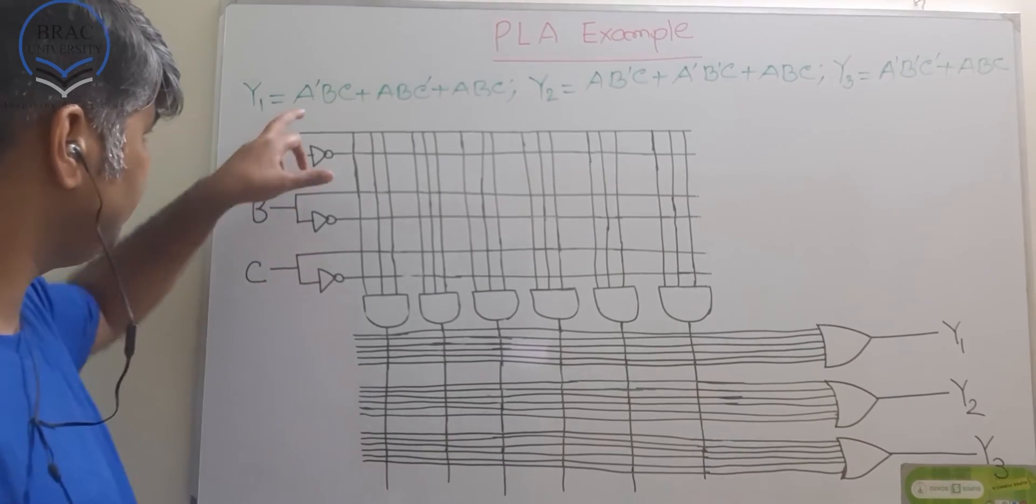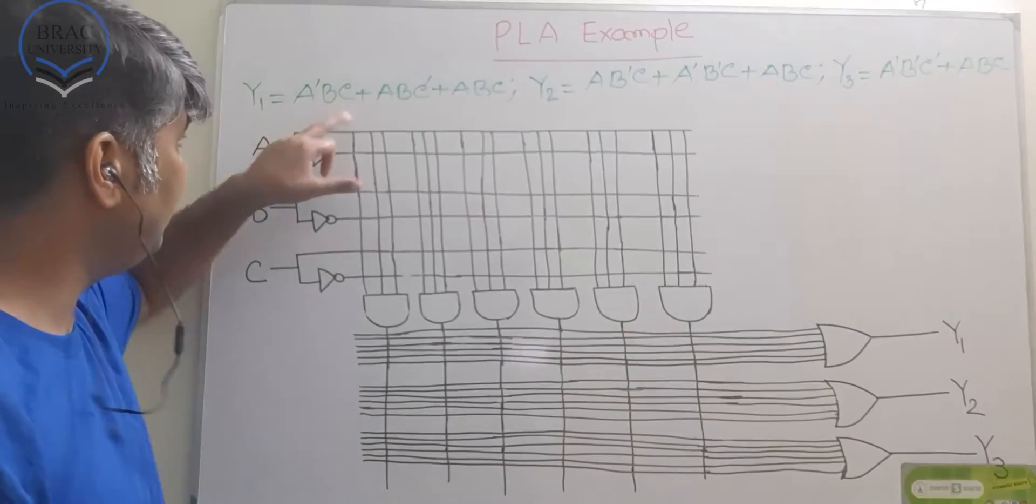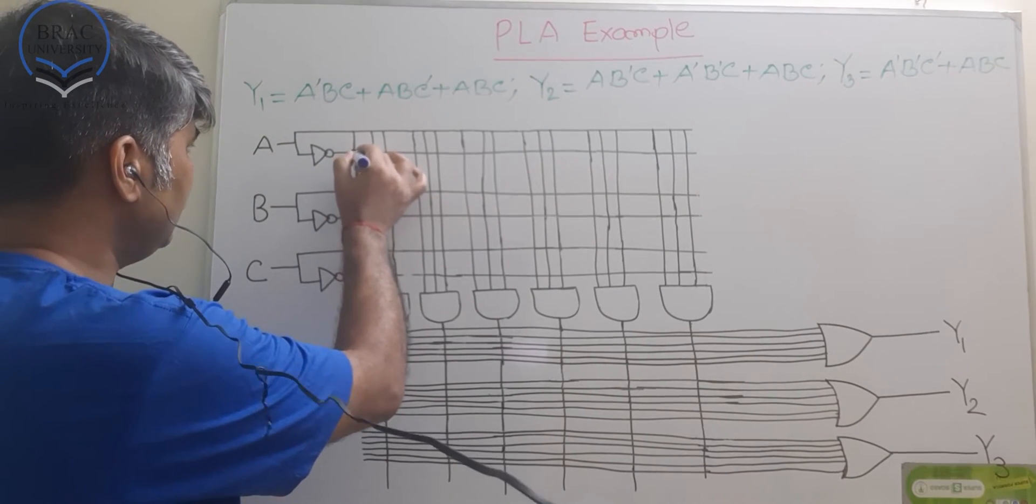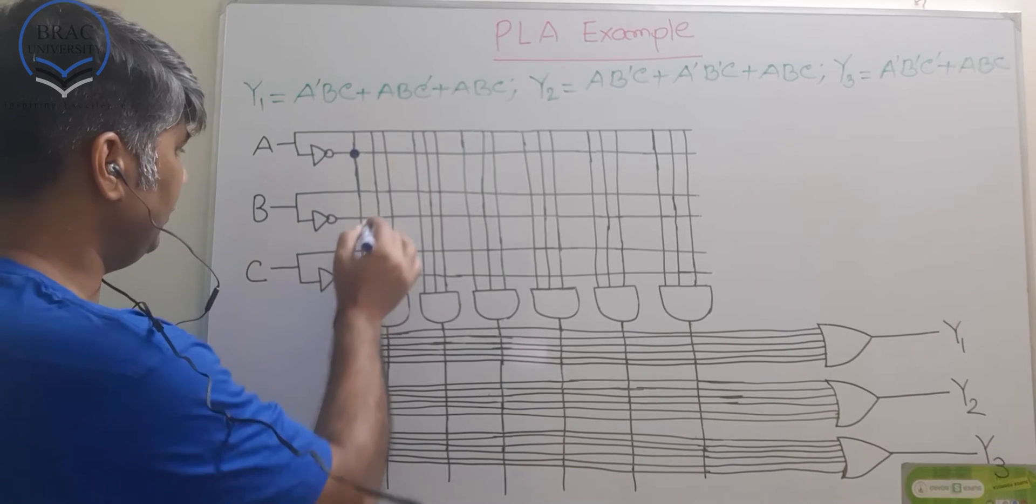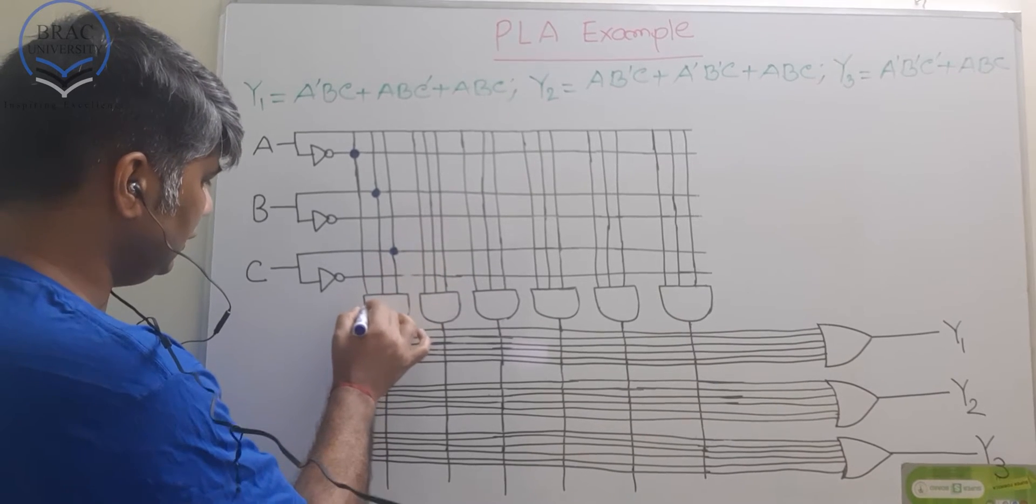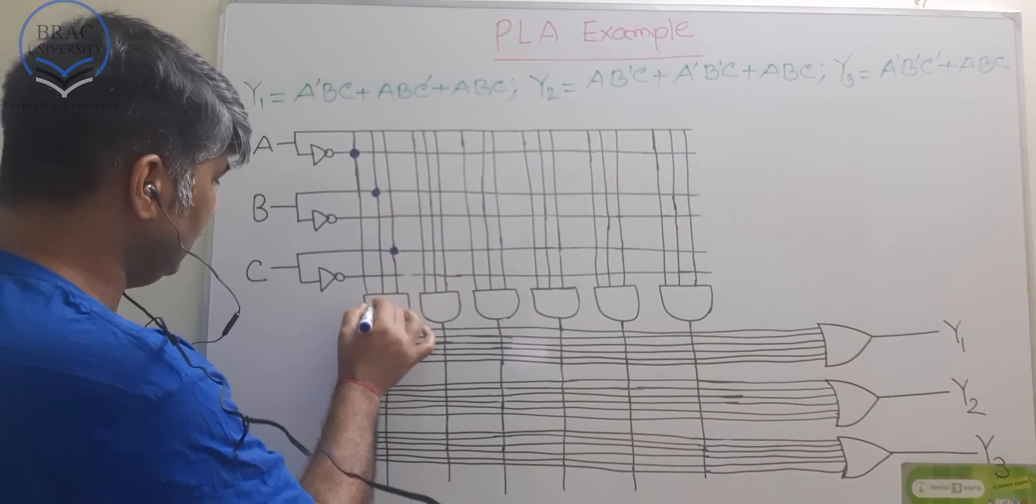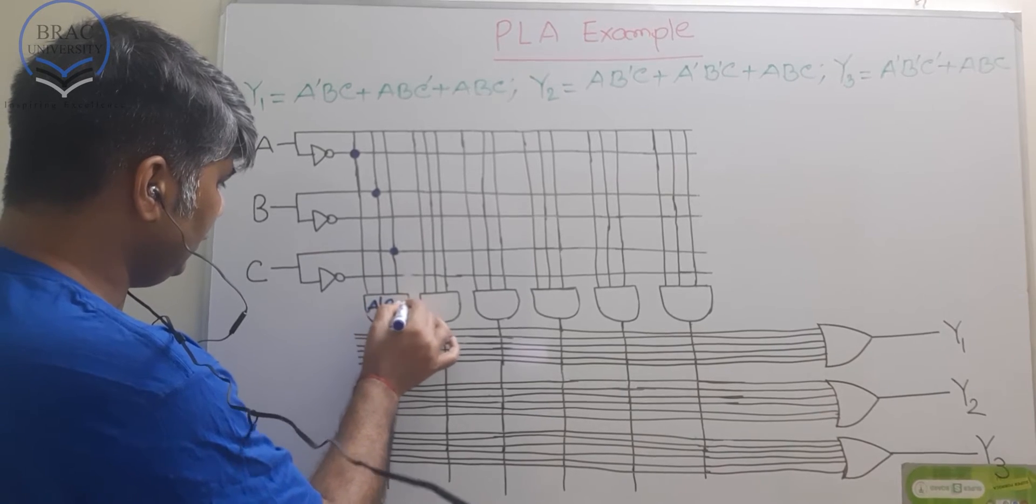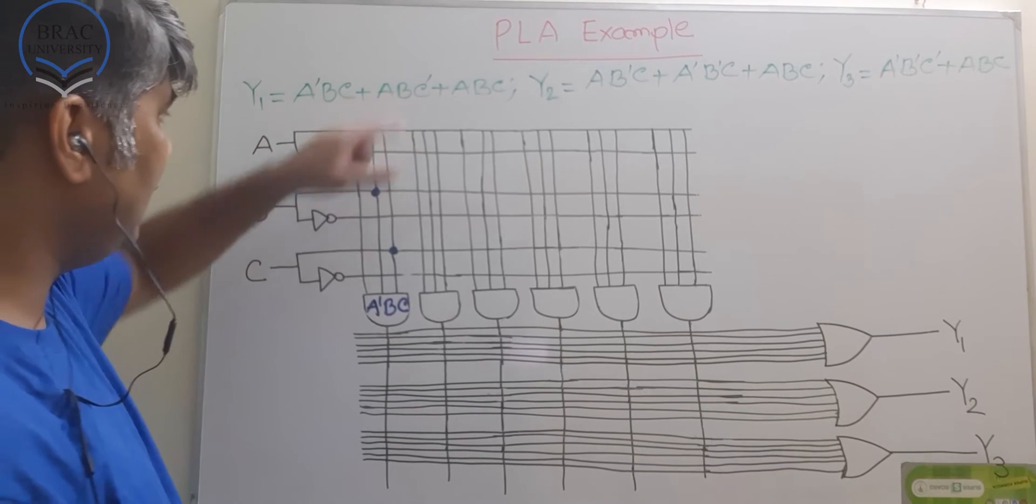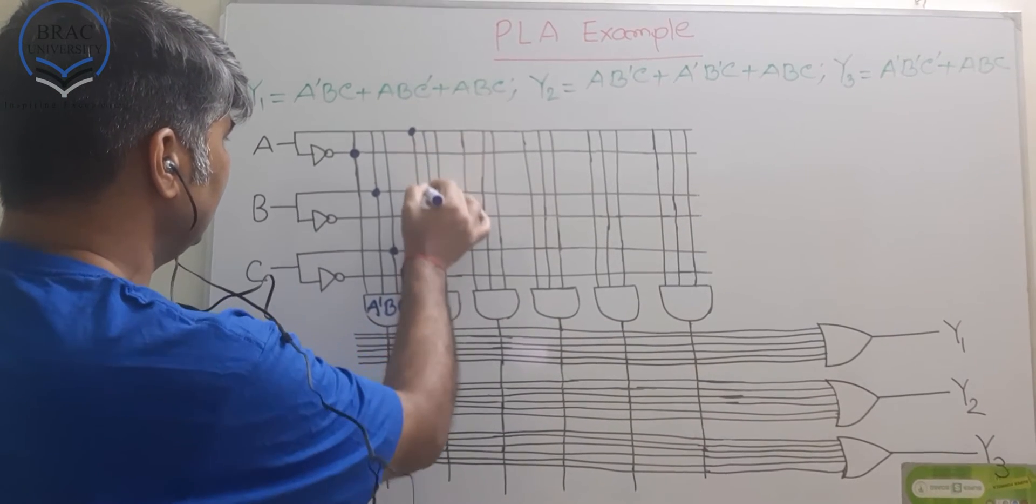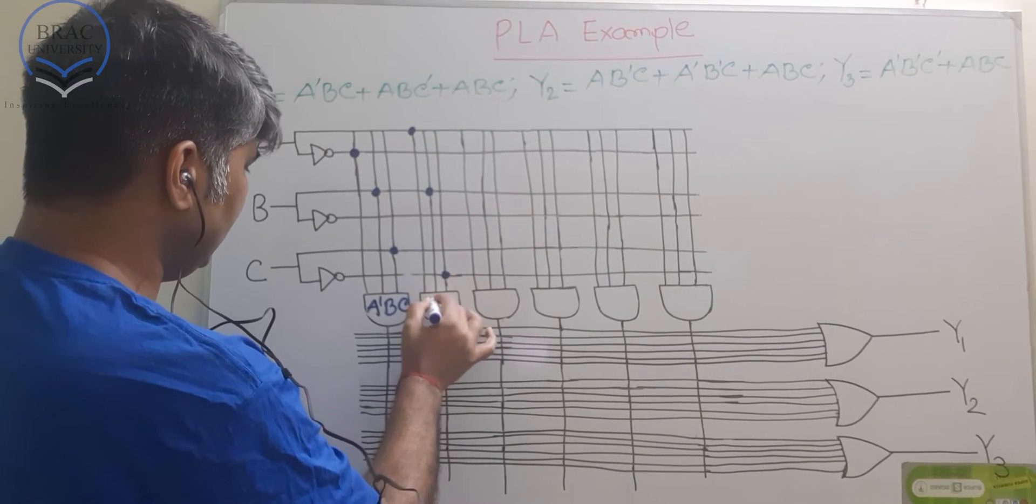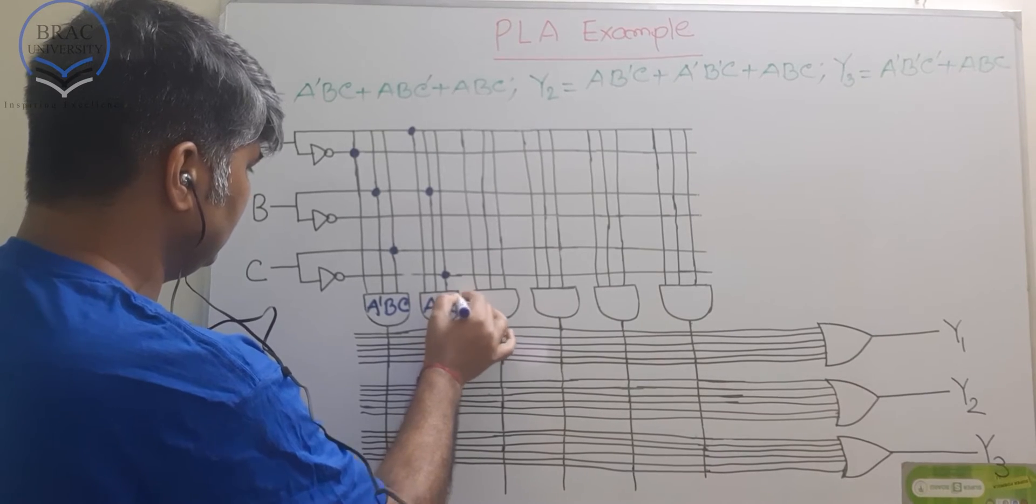Let's start with this one, which means this one is A'BC. What do we need to do? We need to figure out A'. This is our A' and then we'll have B and we'll have C. Now this one will output A'BC. And then we have ABC'. We solder here, we solder here and then we solder here. We can write ABC'.